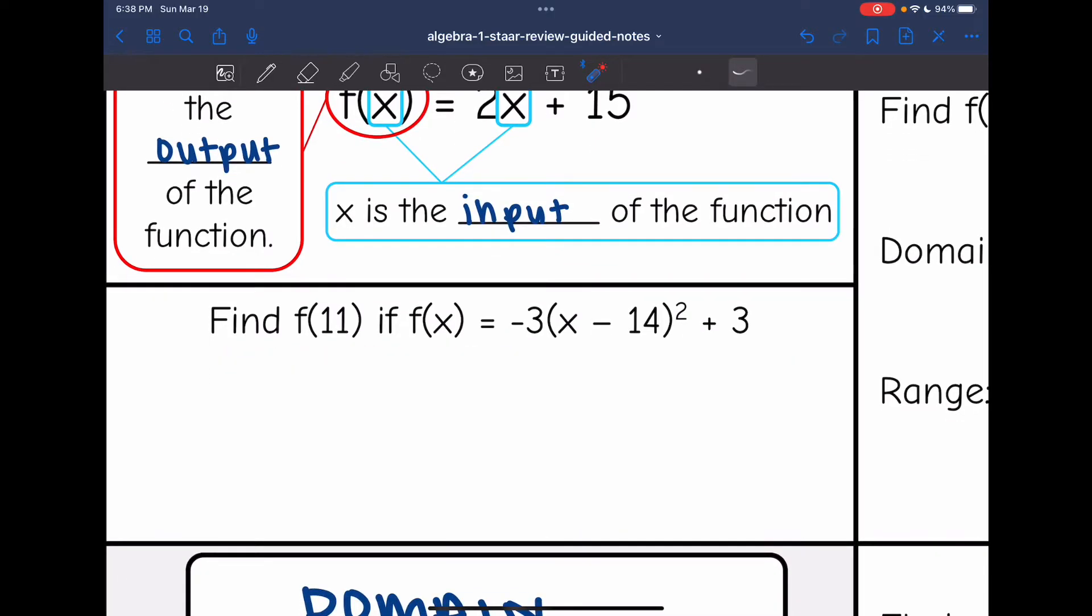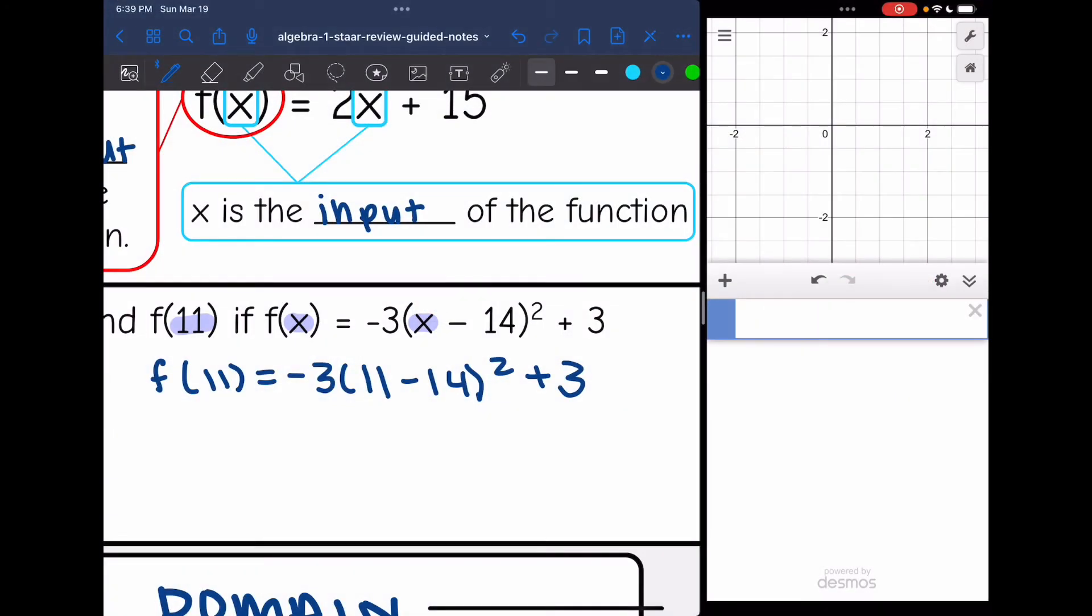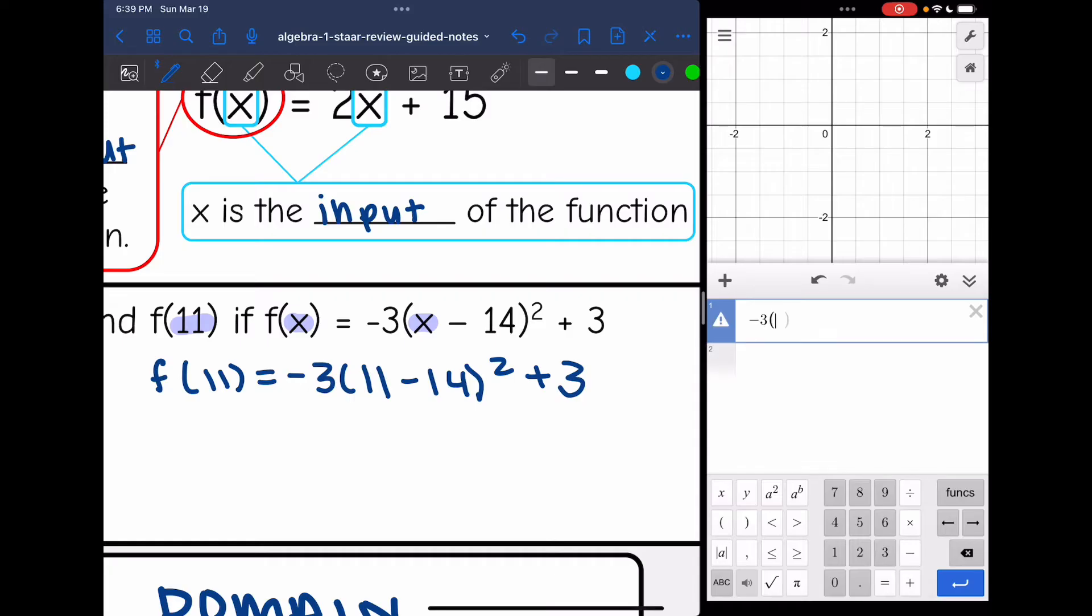So let's look at that for this one right here. It says find f(11) if f(x) equals -3(x - 14)² + 3. And you can do that by hand if you want, or you can use your calculator. I'm going to get mine pulled up here. So I'll do -3(11 - 14)² + 3. And we get -24. So that means f(11) is -24.